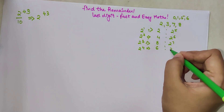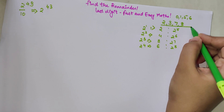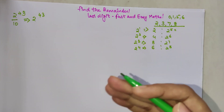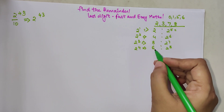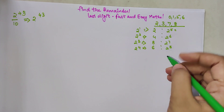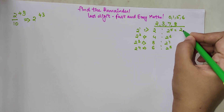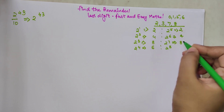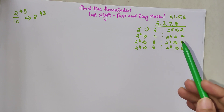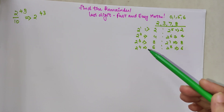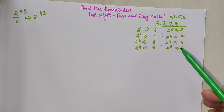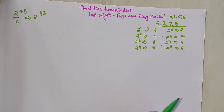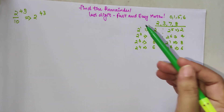Now let's look at what happens to the last digit for higher powers. For 2 raised to 5, we know that's 32, but all you need to do is multiply the previous last digit by 2 and find the last digit of the answer. So 6 × 2 = 12, last digit is 2. Continuing: 2 × 2 = 4, 4 × 2 = 8, 8 × 2 = 16. After every 4th power of 2, the last digits repeat.